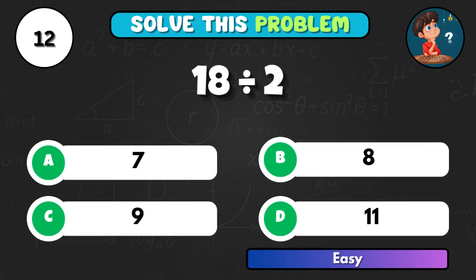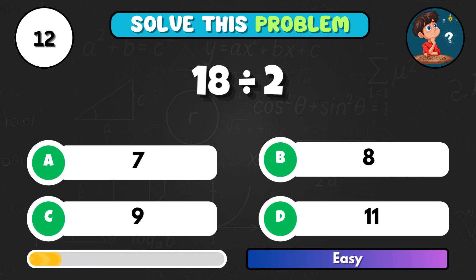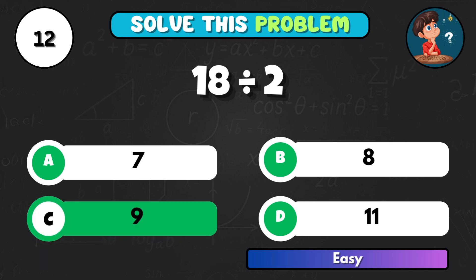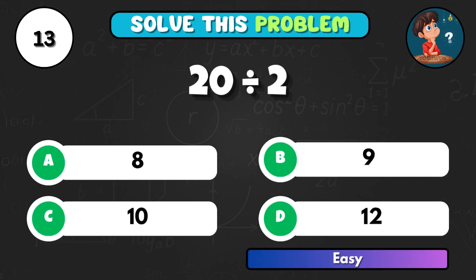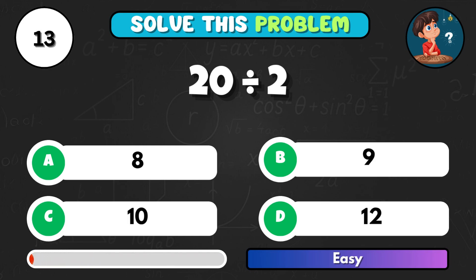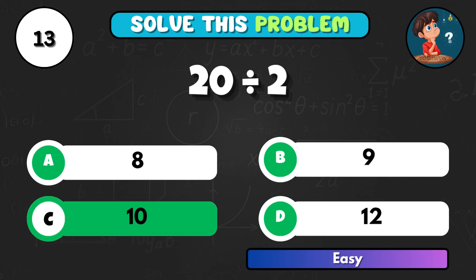18 shared between 2, what's the result? That's C, giving 9. And 20 divided by 2, what's your total? Option C equals 10.